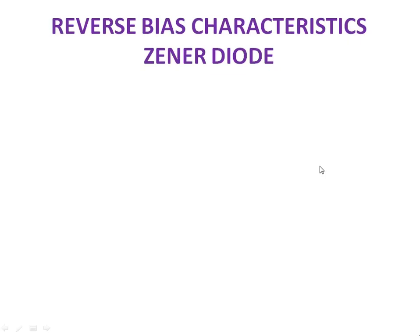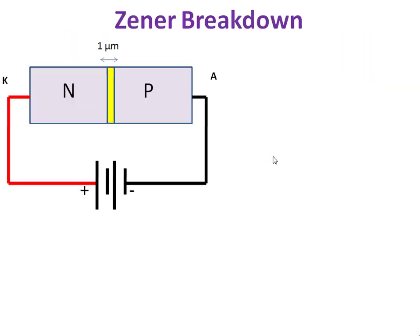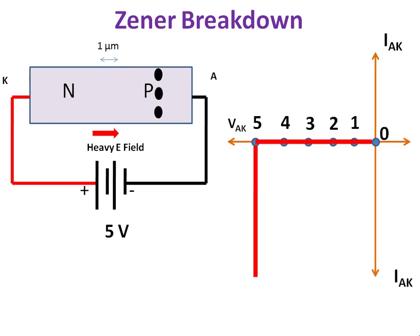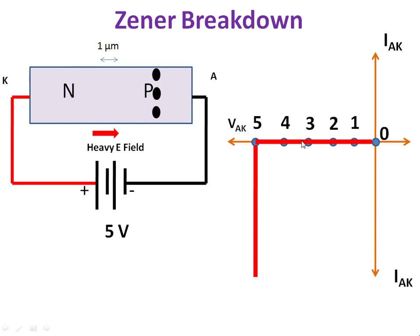Hello students. In this lecture we are going to discuss about reverse bias characteristics of a Zener diode. I have already explained reverse bias characteristics, so I hope you remember this presentation. Please look at the presentation — I am increasing the reverse voltage from 0 to 5 volts, but nothing is happening until the voltage across the diode reaches 5 volts.